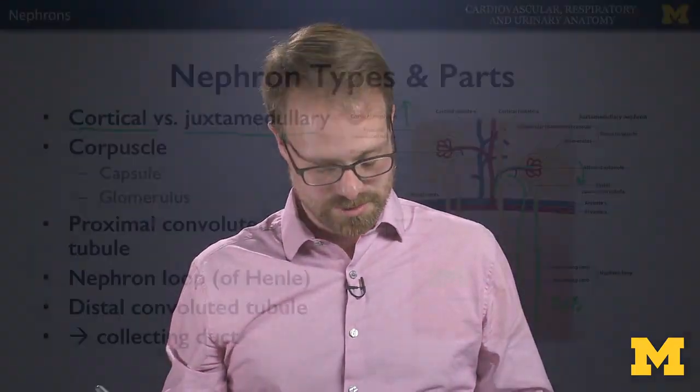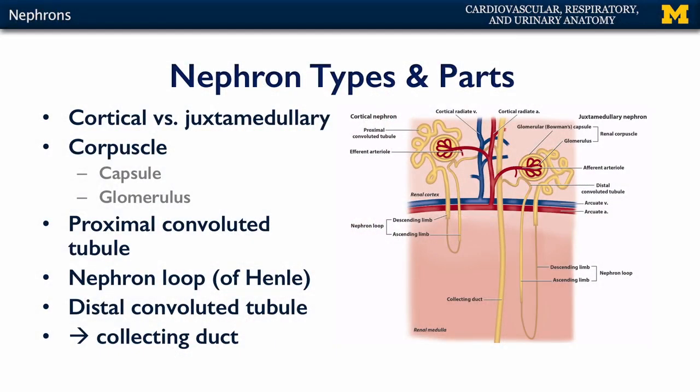But they are exceedingly good at pulling out more water from the filtrate than cortical nephrons. And in other organisms, especially desert-dwelling organisms, juxtamedullary nephrons are much more frequent than they are in humans.